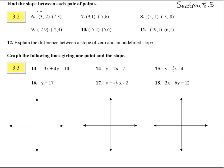Here we are in section 3.5 with the answers to number 6 through 18. For 6 through 11, we are going to find the slope between each pair of points.